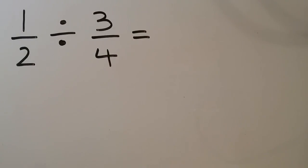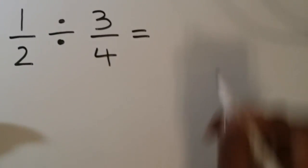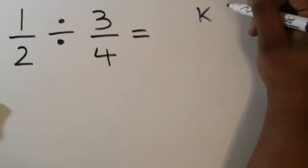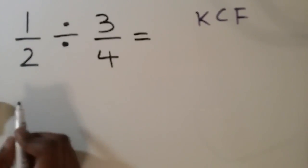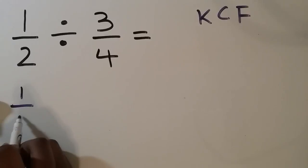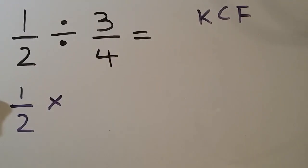For example, if we were being asked to divide 1 over 2 by 3 over 4, keeping KCF in mind, we would keep our first fraction, change the division sign to a multiplication sign, and flip our second fraction.